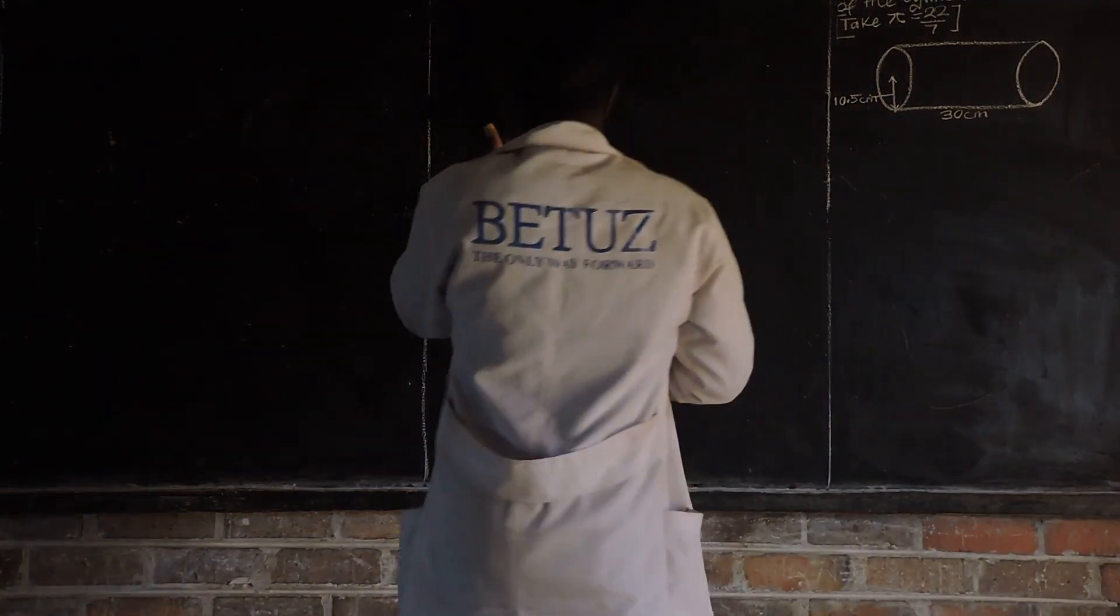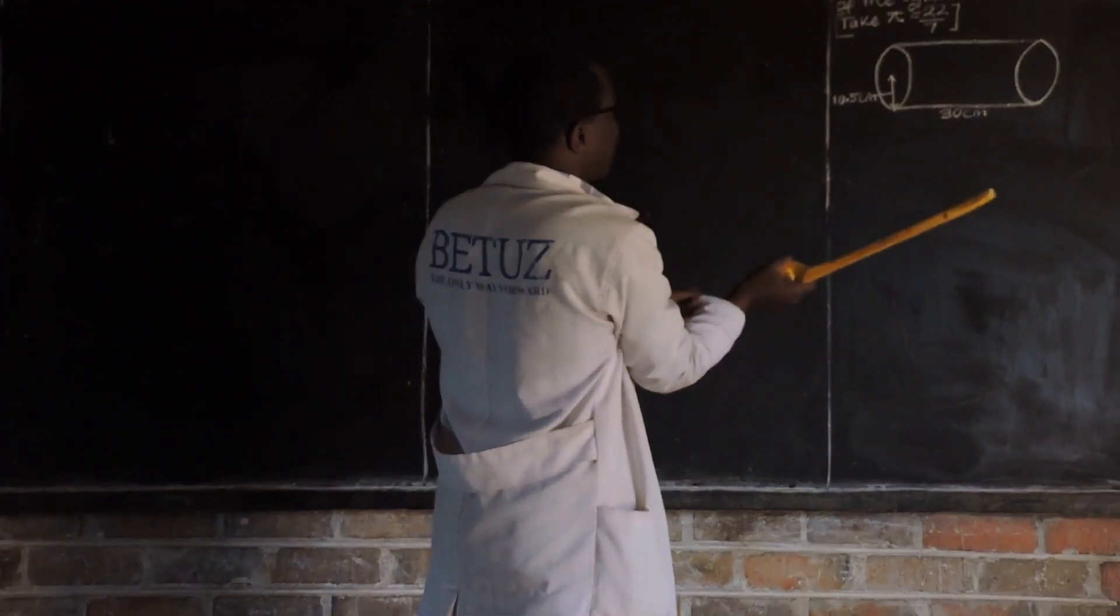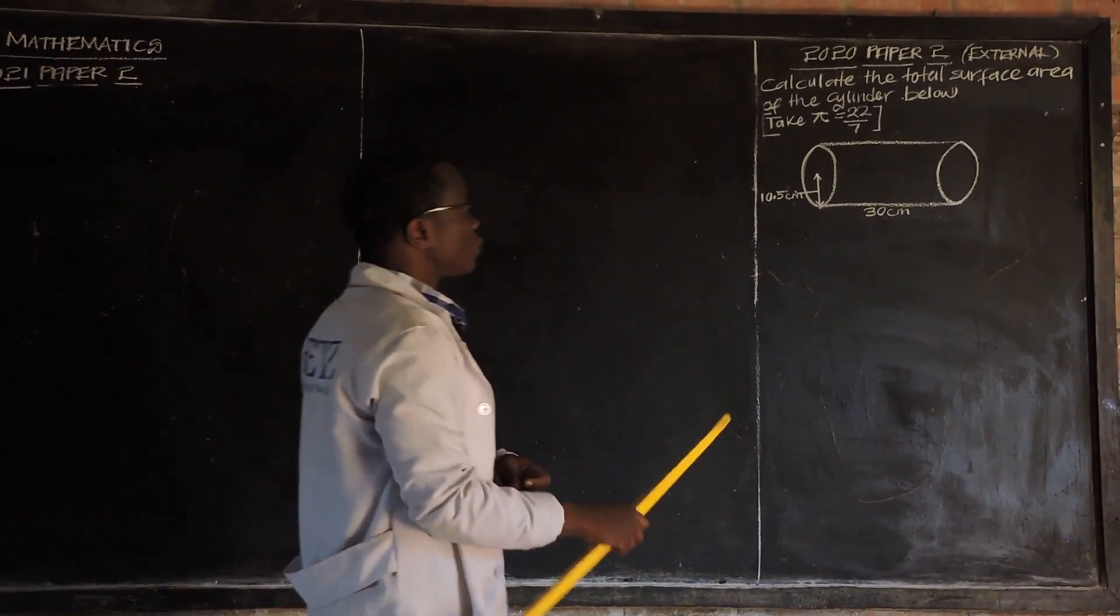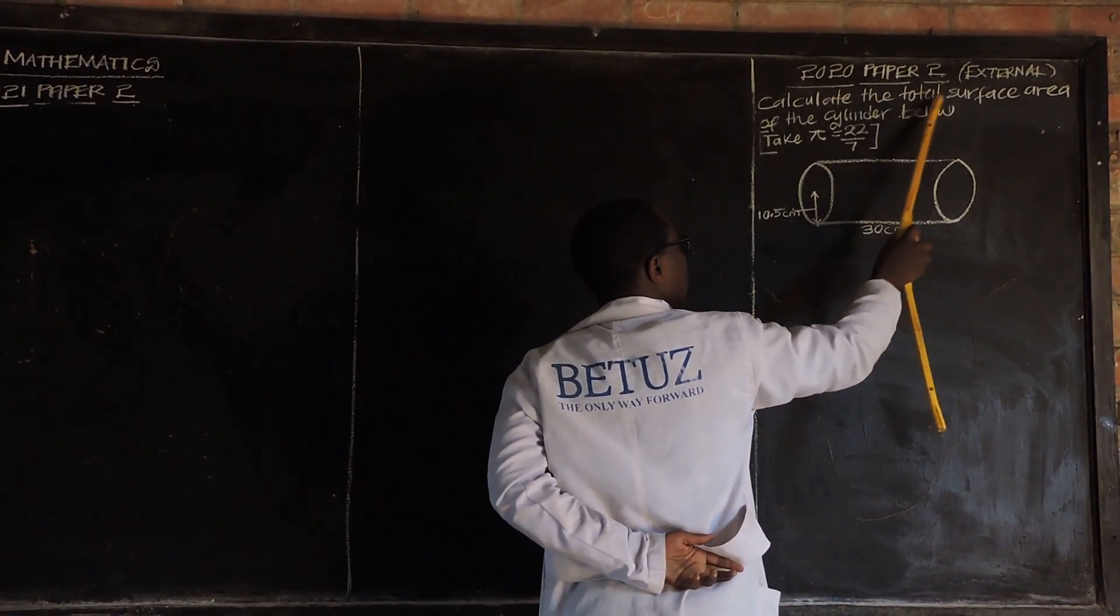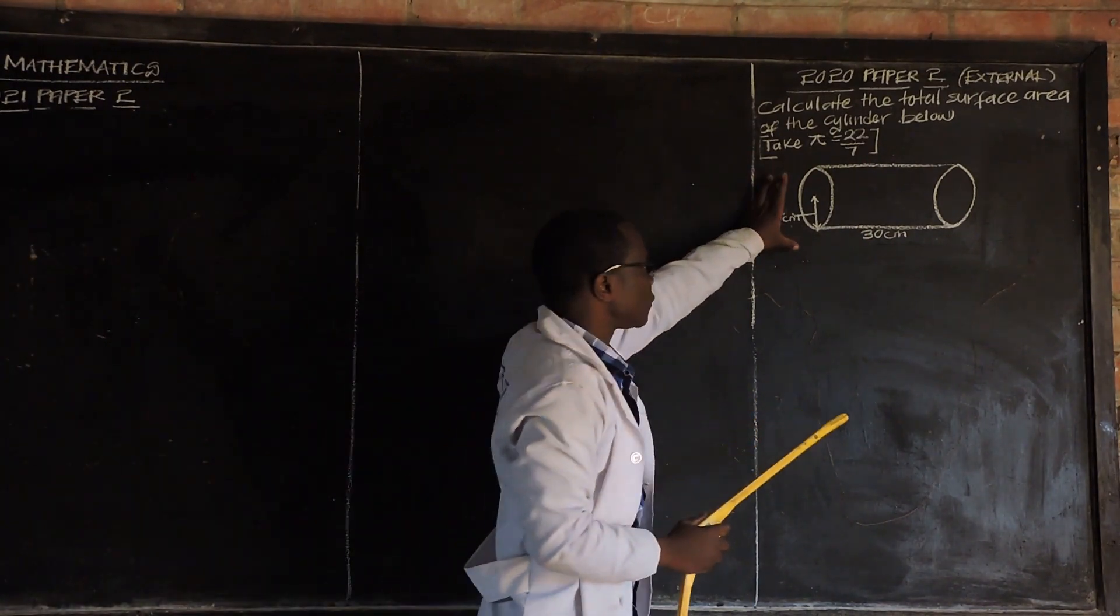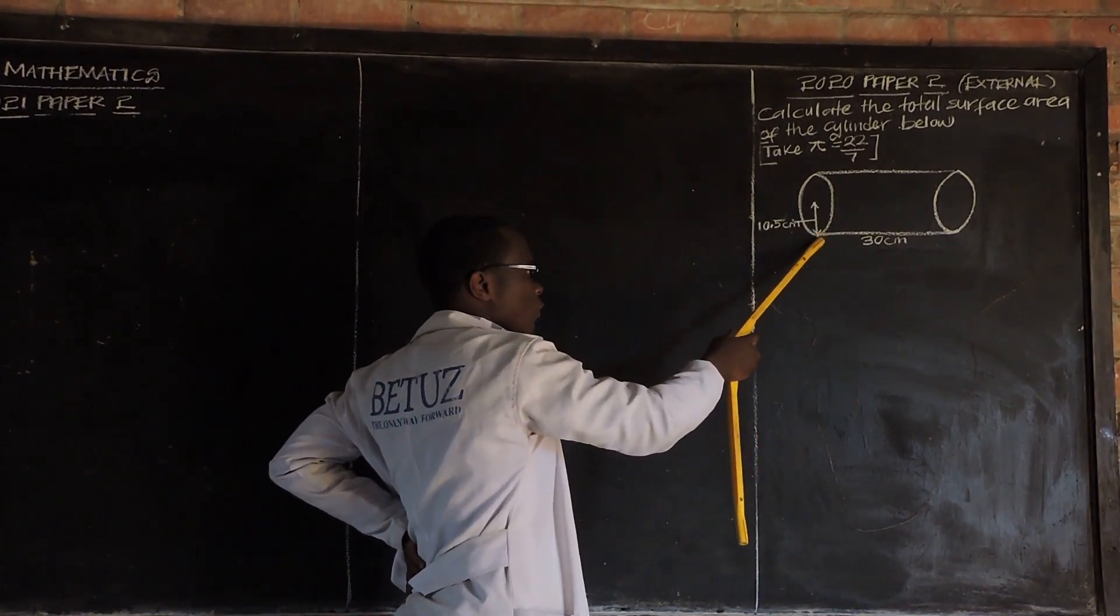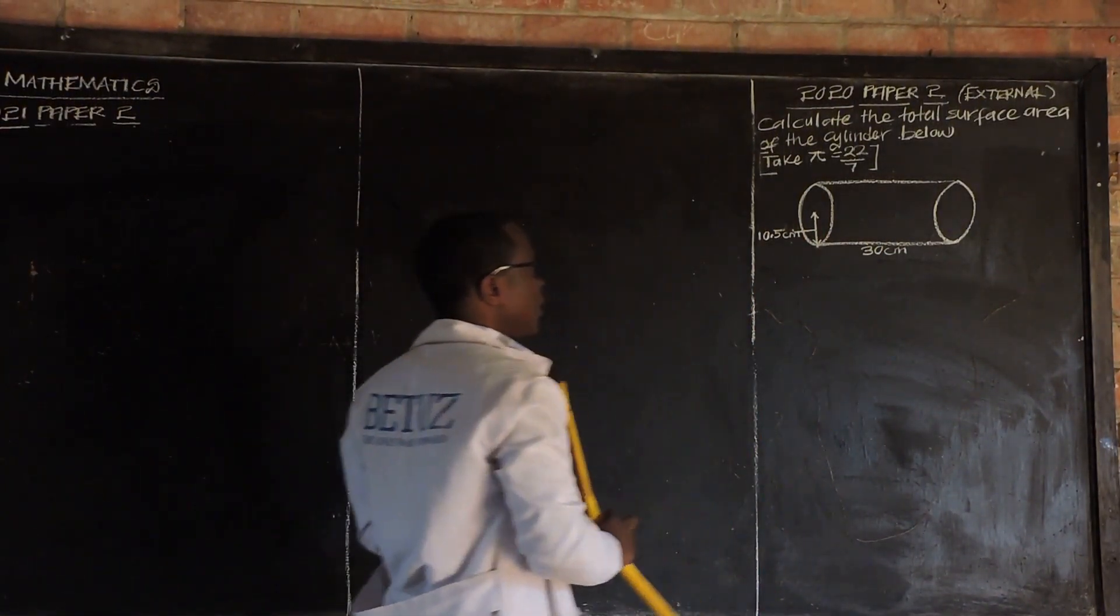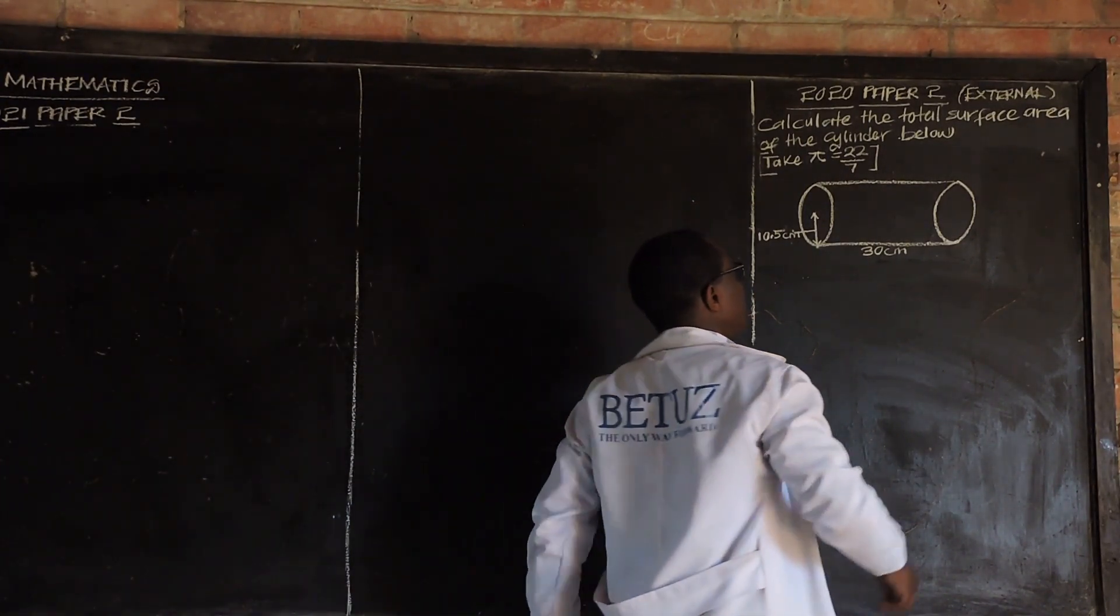So, can I start? Yes. Let us look at the 2020 paper, two external equations on mensuration. Specifically, we are looking at how to find the total surface area. It's saying, calculate the total surface area of the cylinder below. Let us look at what we have been given.